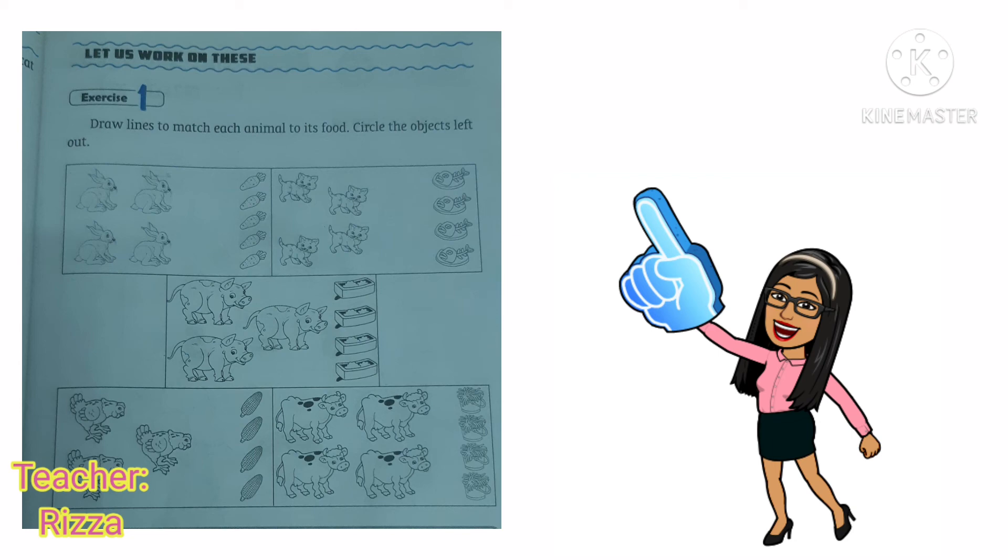Let us try to answer page 105. Draw lines to match each animal to its food. Circle the objects left out.